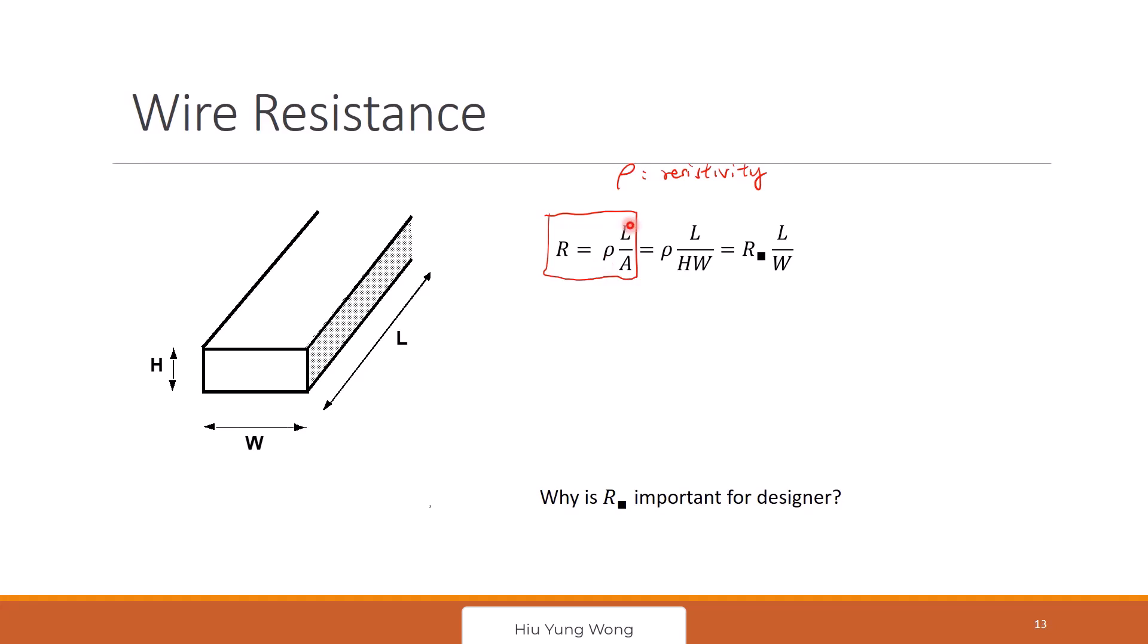And then you multiply by the length divided by the area. That is the resistance. So this is from here to here. We ask about what is the resistance along this wire. It is equal to the ρ times L divided by W.